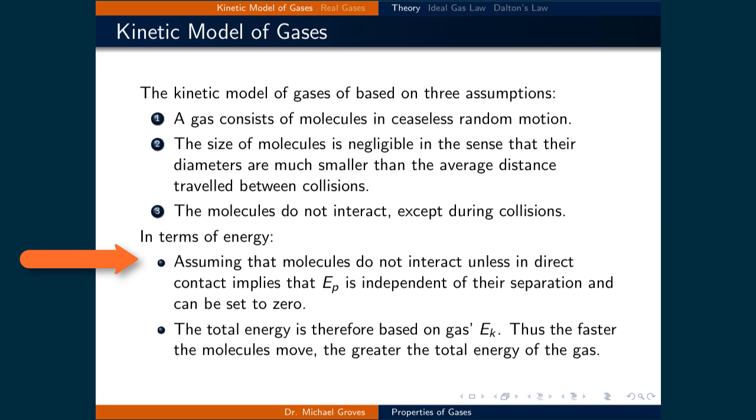Since we are assuming that the molecules do not interact except during collisions, then there is no potential energy in the system. This means that all the energy is kinetic energy. Therefore, the faster the molecules move, the greater the total energy of the system.